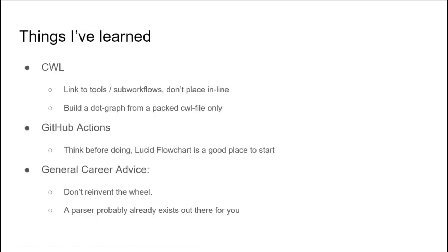Some things I've learned from this project: link tools and sub-workflows to other files — don't place them inline in your CWL workflow, as this generates a different packed file object and also prevents others from reusing them in their own pipelines. Build dot graphs from packed CWL JSON files only, as this generates more consistent results. From a GitHub Actions side, like CWL workflows they can be quite abstract and some planning is required before you start writing them. I like to use Lucid flowchart for generating diagrams and mapping out my ideas first. General computer science advice: don't reinvent the wheel — there's a lot to learn from reading and using other people's code. This was pivotal for the CWL parser and dot parsers. If there's an edge case not covered, you can fix it with a pull request and then you've got a comprehensive parser between the two of you.